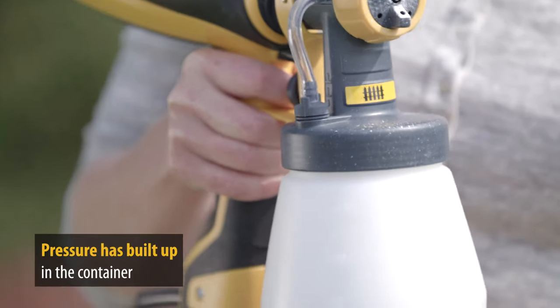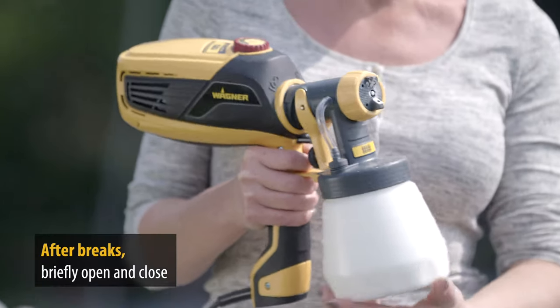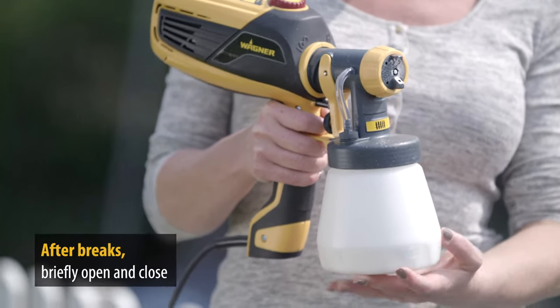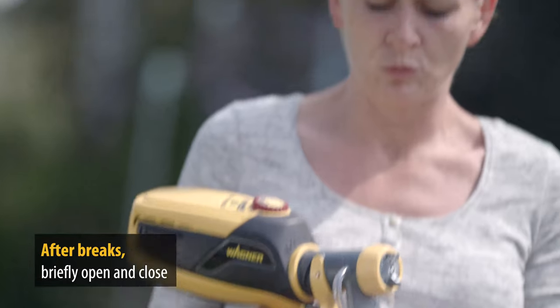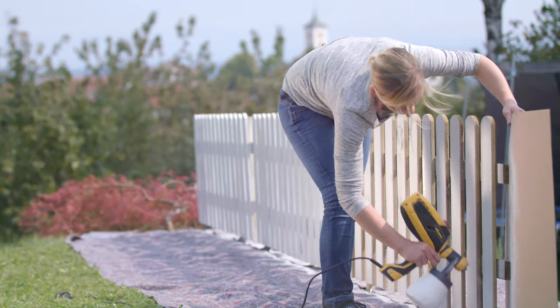After longer breaks, pressure can build up in the paint container. This can cause paint to drip from the nozzle. Here is a tip: rotate the container slightly after any interruption of work. This will release the pressure and return the paint volume to normal.